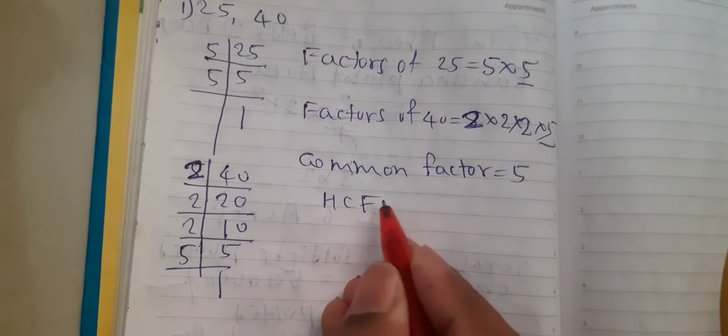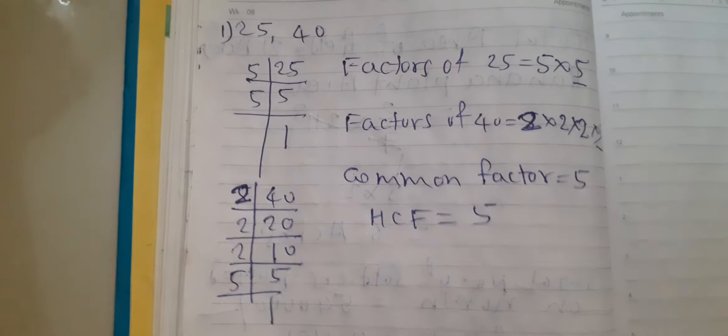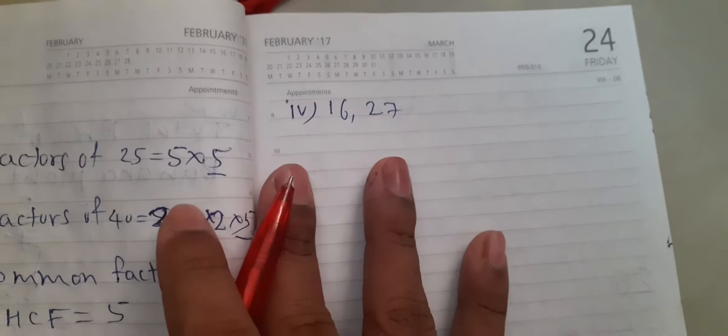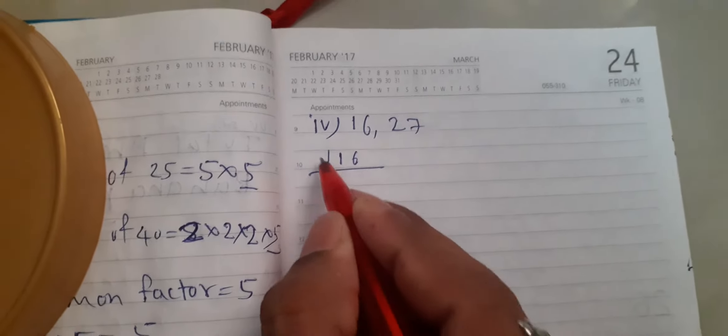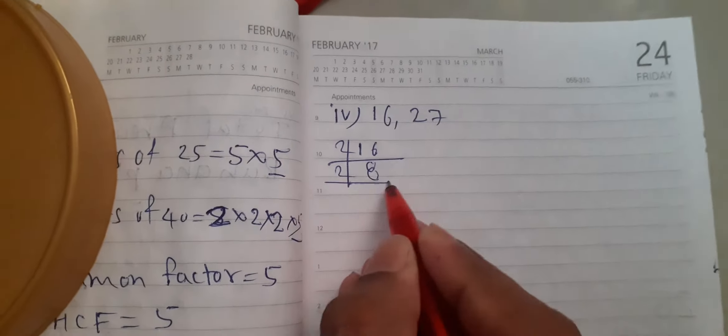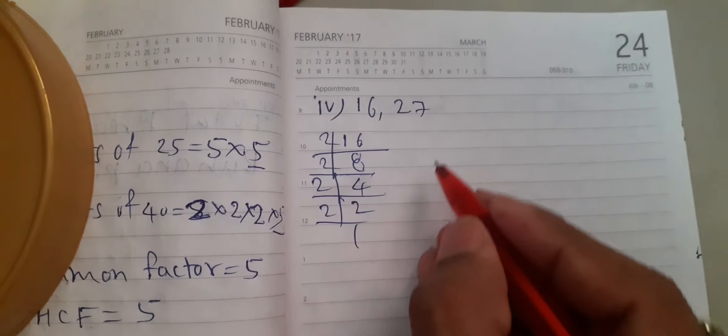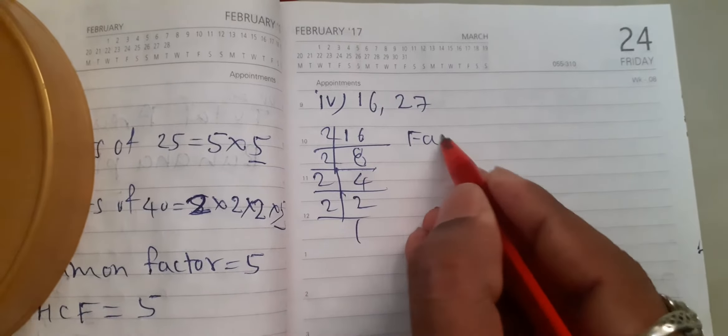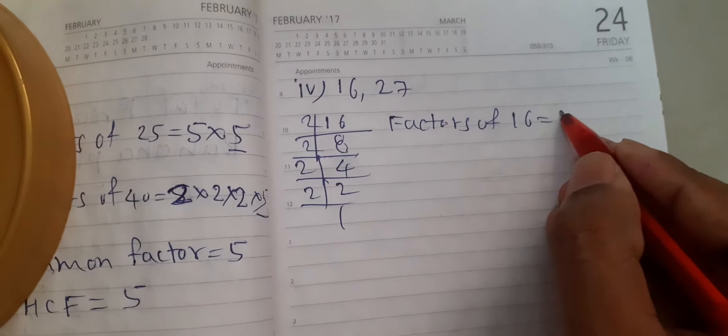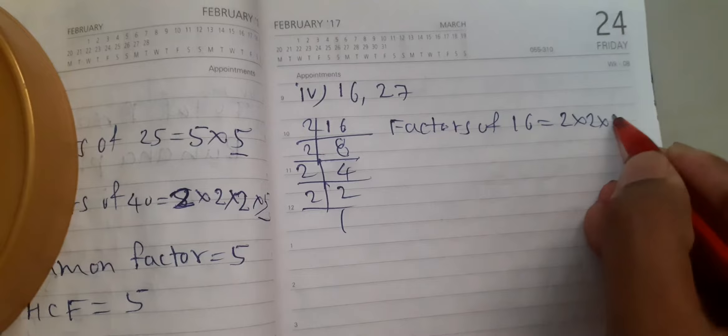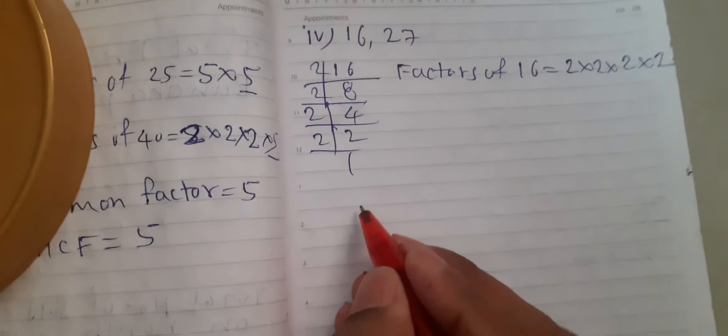Next question is 16 and 27. 16 is equal to: 2 times 8 is 16, 2 times 4 is 8, 2 times 2 is 4, 2 times 1 is 2. Now the factor of 16 is equal to 2 into 2 into 2 into 2.